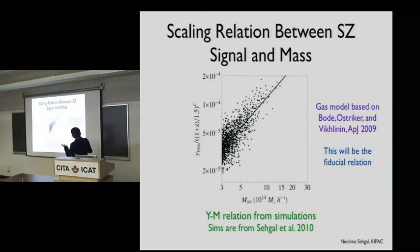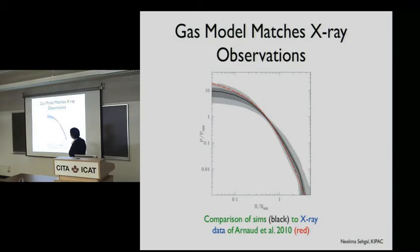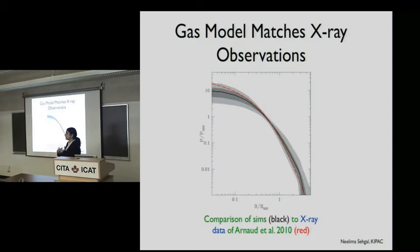These particular simulations are not hydrodynamics from first principles; they're simulations where the gas has been painted on to the dark matter halos. That gas model is calibrated off massive clusters found in X-ray observations. Here you can see the pressure profile as a function of radius: the black line is the simulation and this is the match to the Arnaud et al. X-ray data. The match is quite good, although these simulations were calibrated off massive clusters at low redshift, and the extrapolation was done to higher redshift and lower masses.